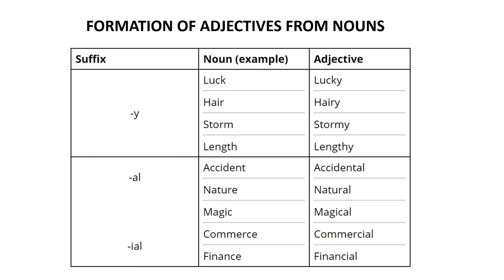When you observe words ending with '-e' — such as 'nature', 'commerce', and 'finance' — you need to drop or remove the 'e' and then add the suffix. For example: 'nature' — remove the 'e' and add '-al' to get 'natural'. 'Commerce' — remove the 'e' and add '-ial'. Similarly with 'finance'. Please go through the table once again after the whole video completes.